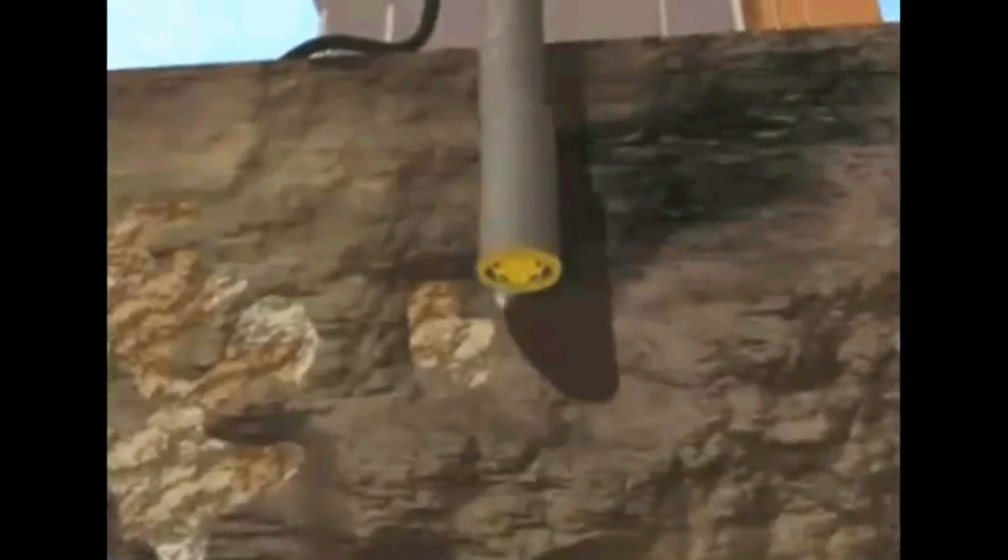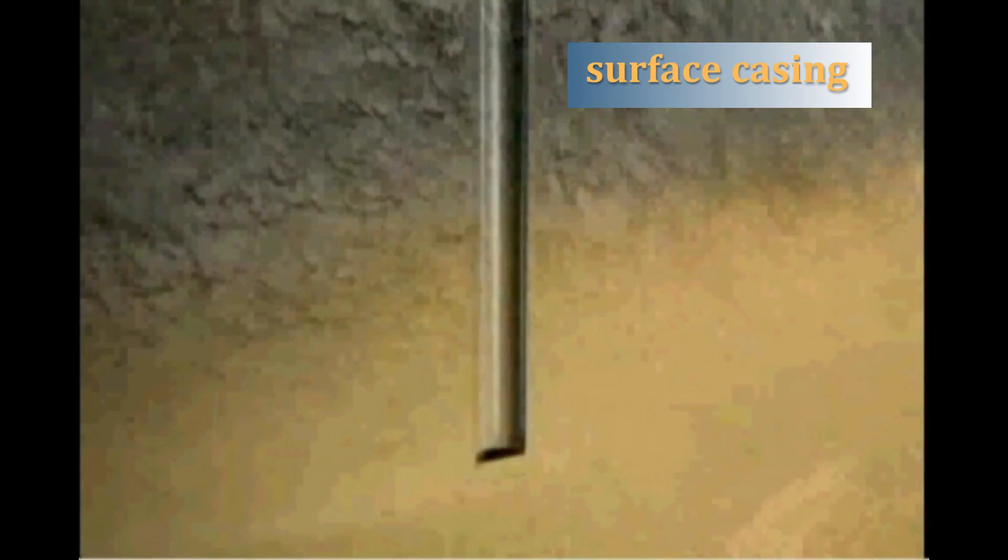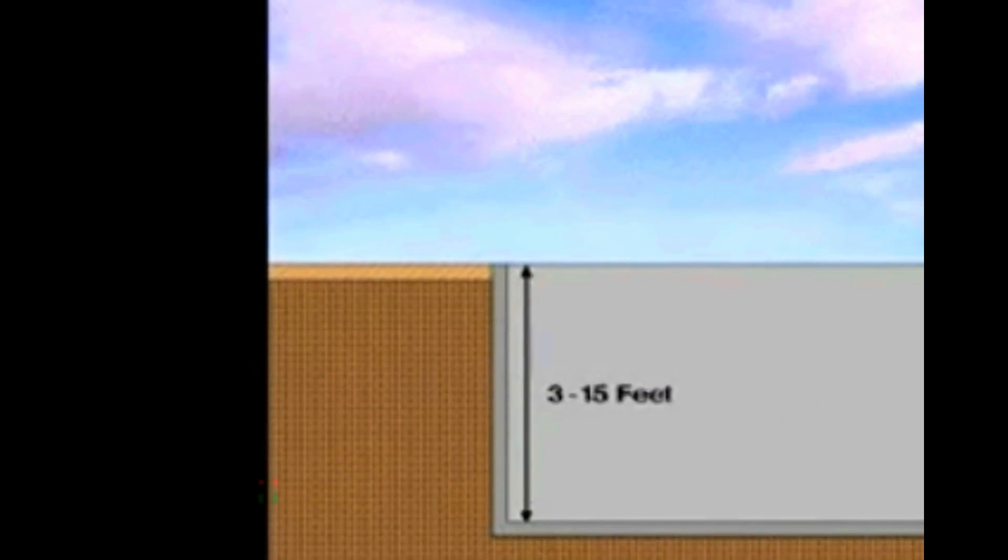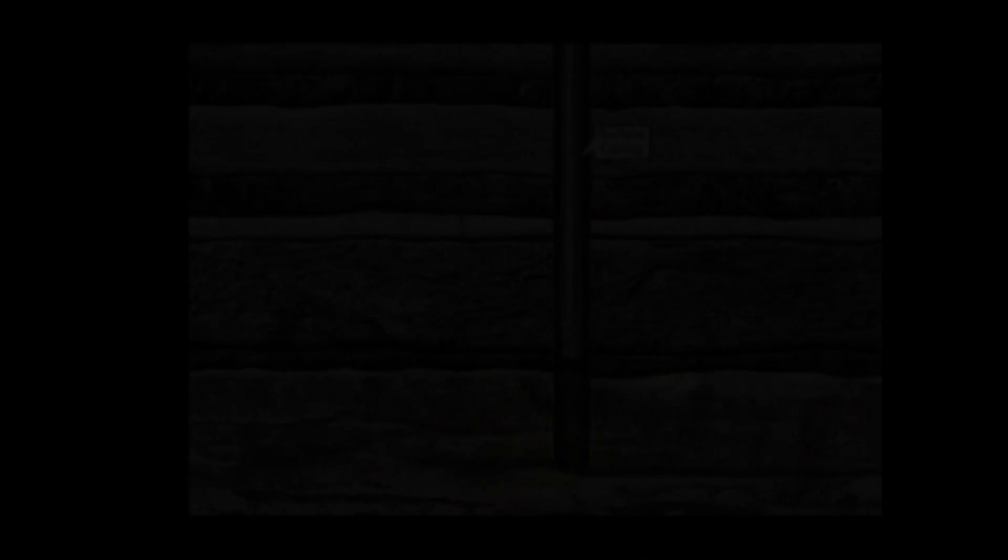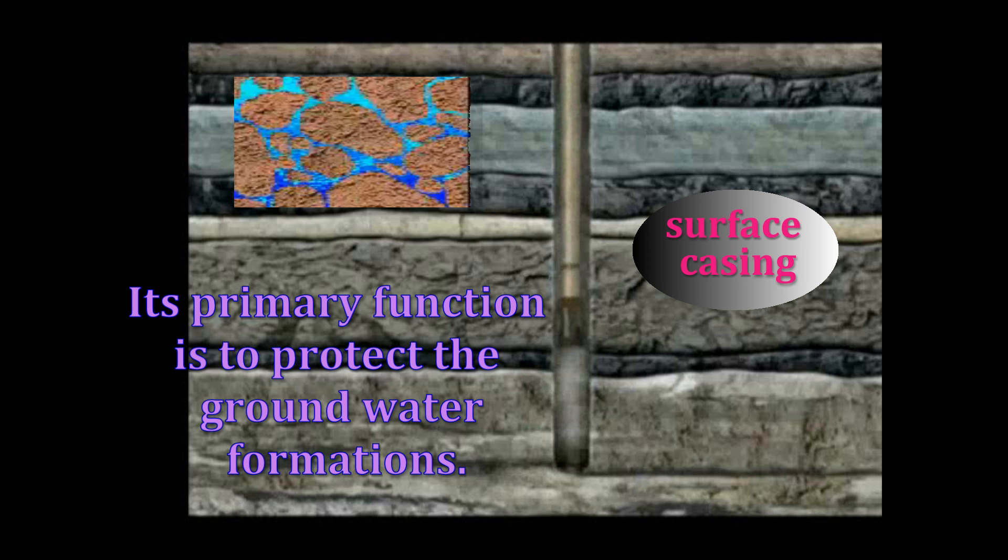Surface casing, for example, is the first casing string to be run when the well is first drilled. As the name implies, this surface casing sits at the top part of the well and is attached to the well head. Its primary function is to protect the groundwater formations from contamination.